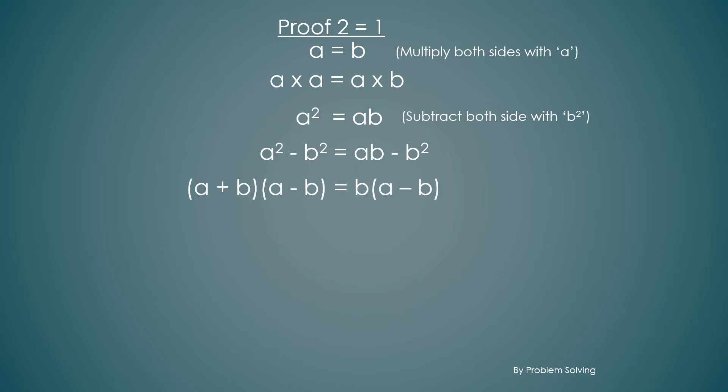Now when we move a minus b from the left hand side to the right hand side we'll cut both of them out dividing them. So we're left with a plus b equal to b.